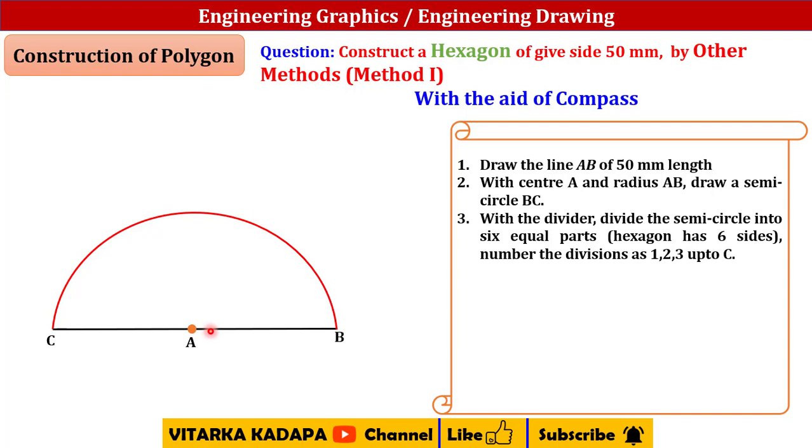I can say 180 divided by 6, I will get 30 degrees. So this is 30 degrees angle I have to keep.